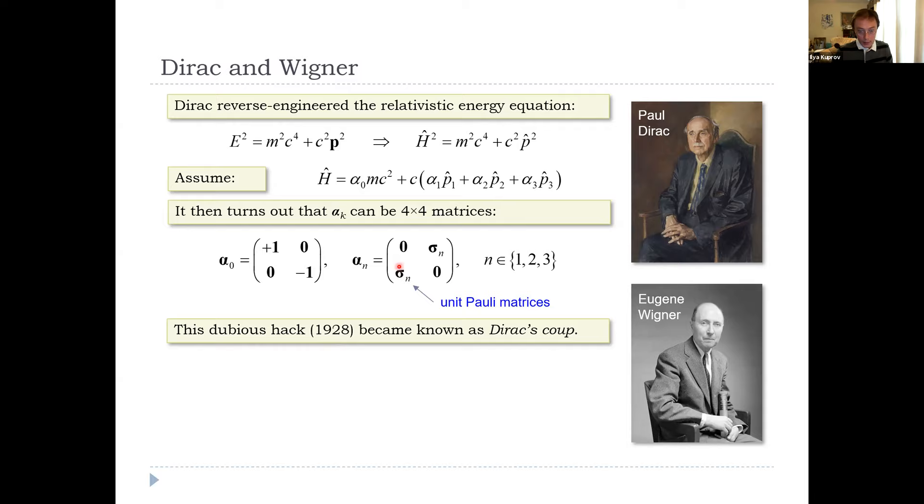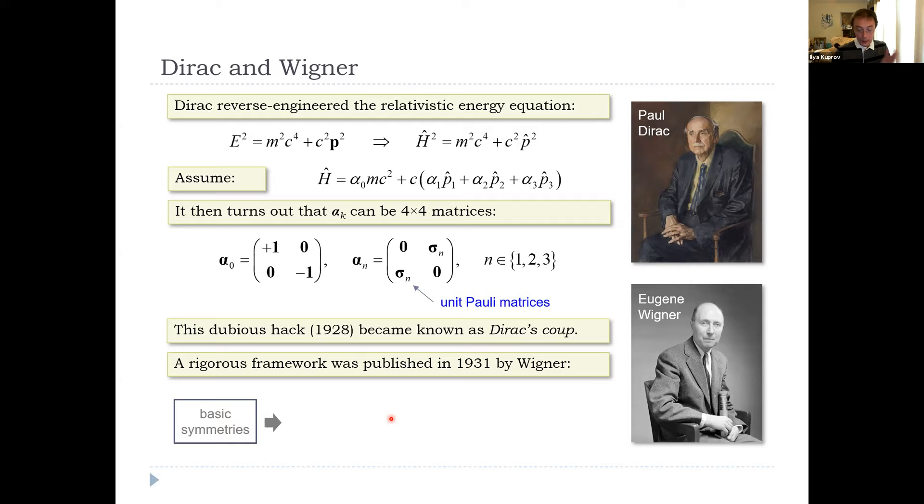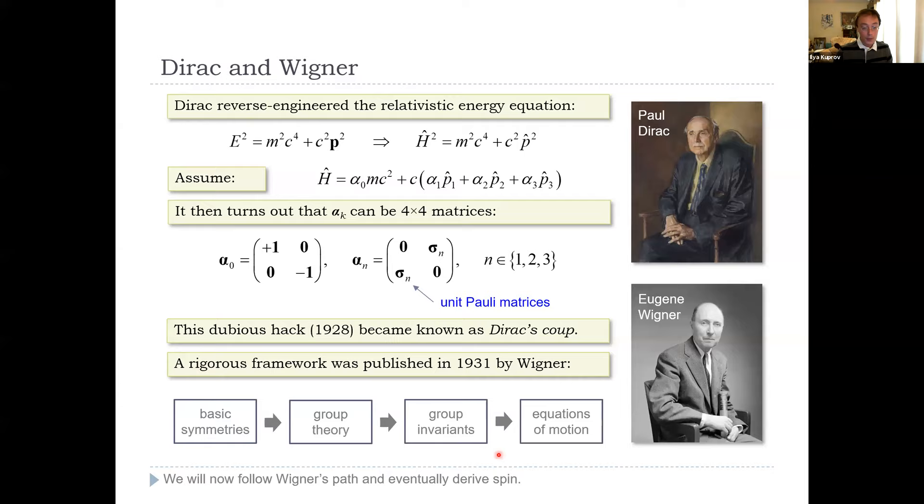That later turned out to do with antimatter, but at the time it was much, much later. Dirac produced a mysterious equation that fitted everything and explained nothing. It wasn't until Wigner published his book in 1931 that a neat derivation from beginning to end became available. Wigner started from basic symmetries. He used group theory to find the group invariants of those symmetries, and then he turned those invariants into the equations of motion. So what we will now do is follow Wigner's path through those basic symmetries, and eventually we will derive spin.